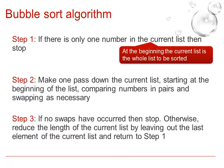Step 3, if no swaps have occurred then stop, so this is the termination or end step. Otherwise reduce the length of the current list by leaving out the last element of the current list and return to step 1. Step 3 not only provides the end or termination step but also the loop, the iteration.